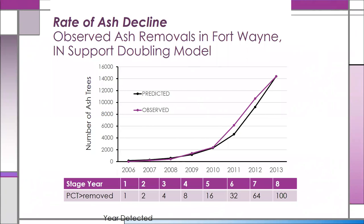We validated the doubling model by looking at the removal of 14,000 ash trees from the streets of Fort Wayne. In year one — 2006 — about 1% of trees were removed; year two, 2%; year three, 4%; then 8, 16, 32, 64, up to 100% removed. Our predicted doubling model pretty much matched the actual removal rate.